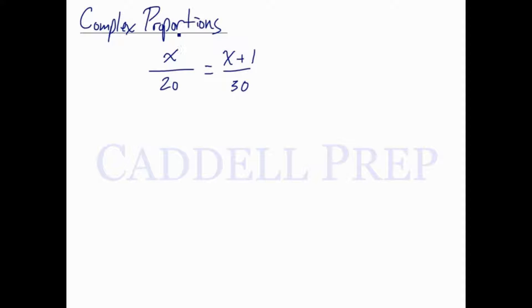Let's go over complex proportions. In this case, what makes this complex is that we have a variable in more than one location. But we're going to use the same method, just going to cross multiply.